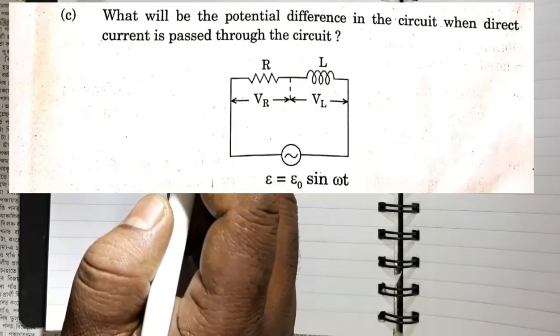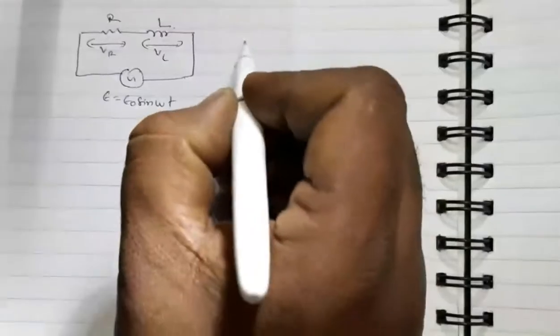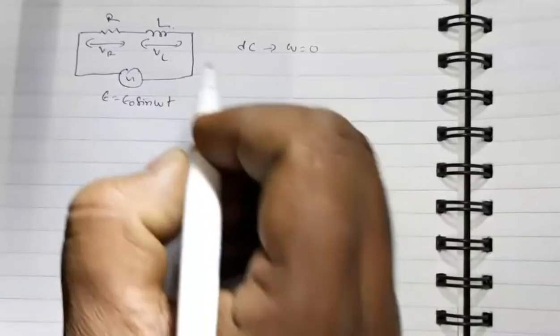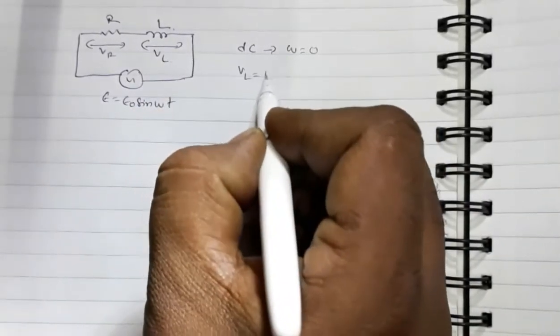In this question, they have asked for the potential difference in the circuit when direct current is passed. For DC, angular frequency is zero. The potential drop across the inductor is given by VL equals